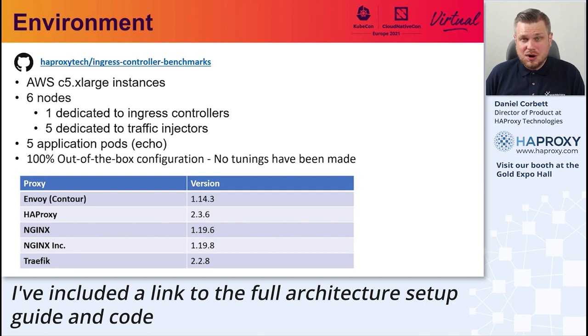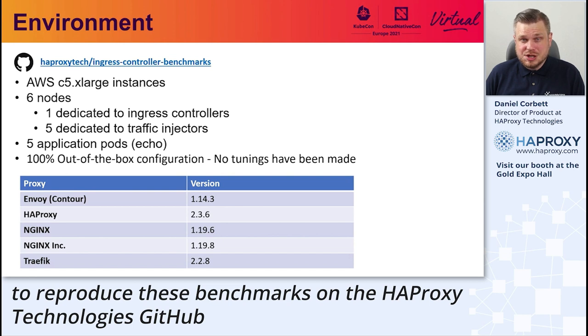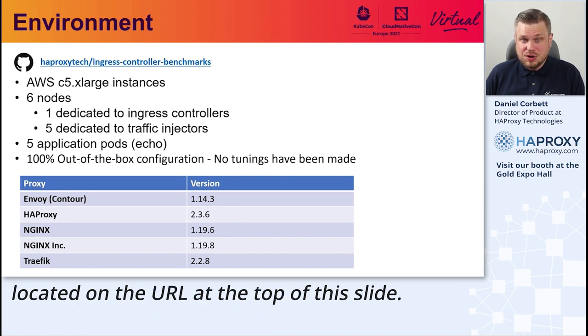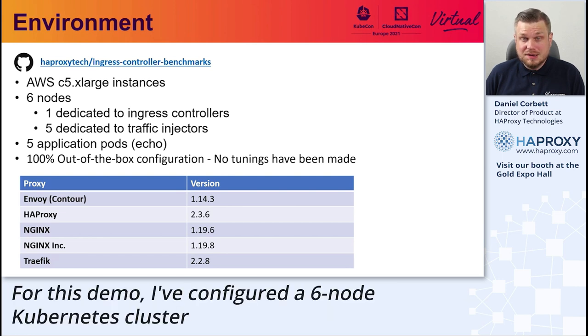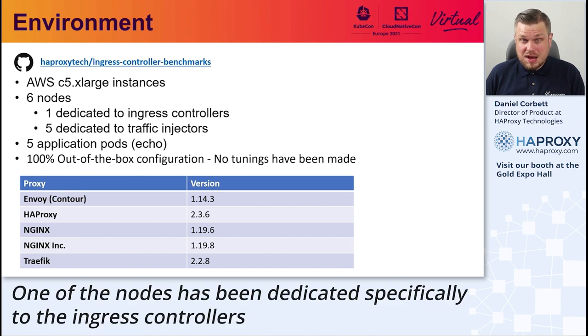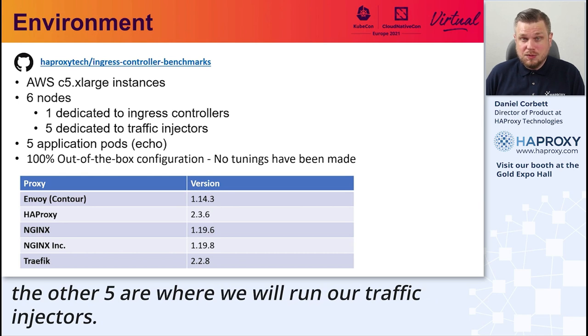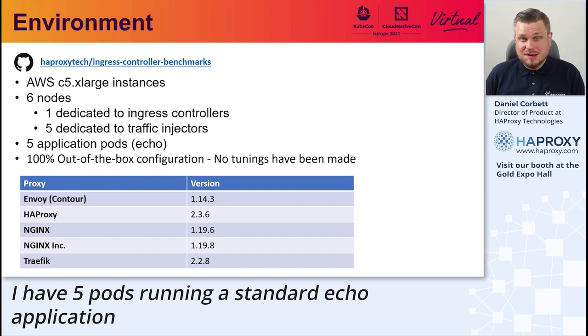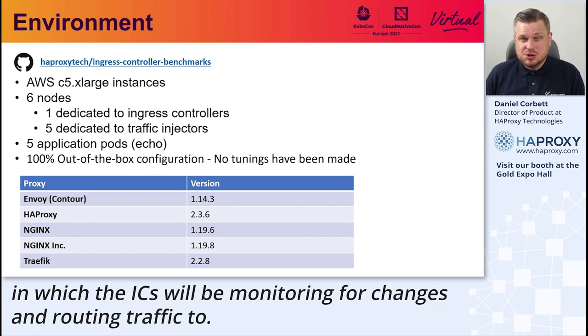I've included a link to the full architecture setup guide and code to reproduce these benchmarks on the HAProxy Technologies GitHub located on the URL at the top of this slide. For this demo, I've configured a six-node Kubernetes cluster running on C5 extra-large instances. One of the nodes has been dedicated specifically to the Ingress controllers. The other five are where we will run our traffic injectors. I have five pods running a standard Echo application in which the Ingress controllers will be monitoring for changes and routing traffic to.